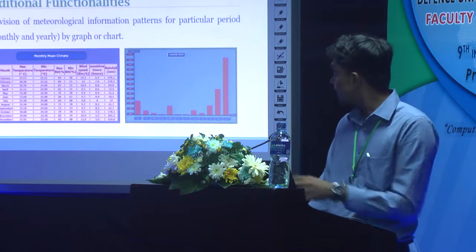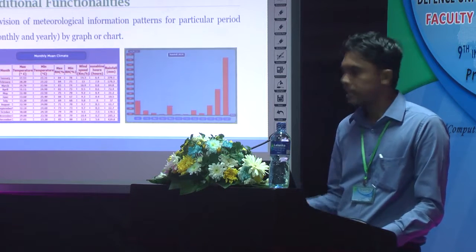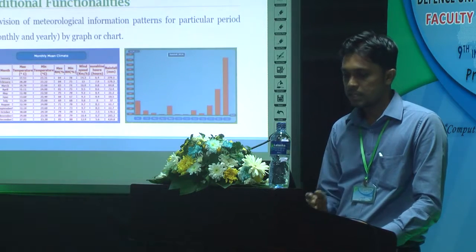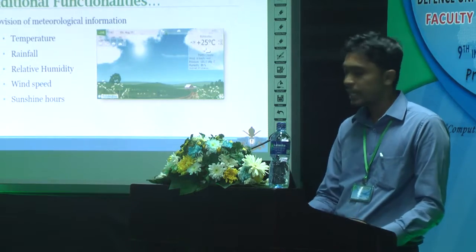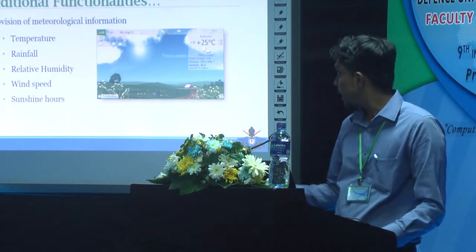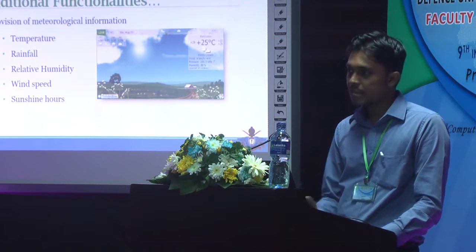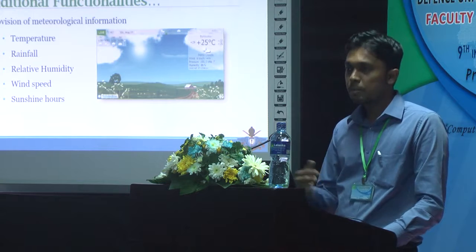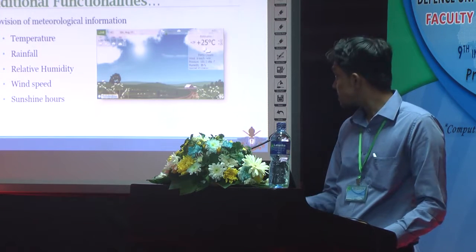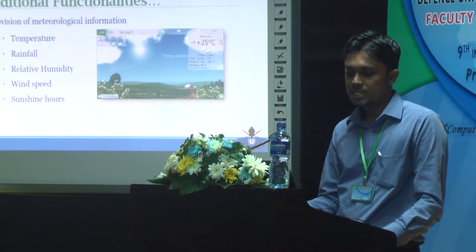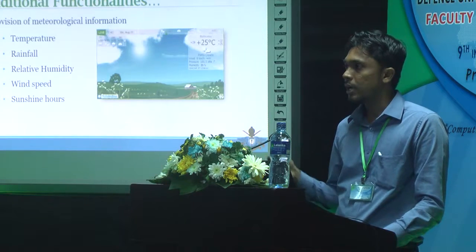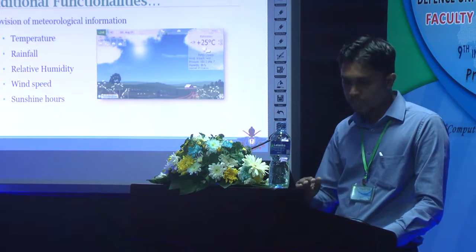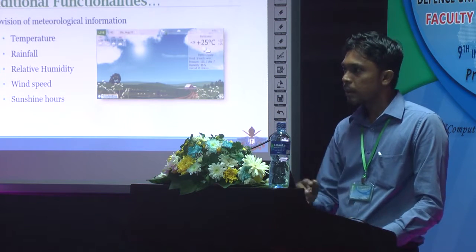There are additional functionalities in the system. One feature displays climatological patterns for each month and each weather parameter. Farmers can also access forecasting data as well as previous weather data from a particular district. Based on this information, farmers can plan their agricultural practices — for example, if a particular area has a high amount of rainfall, they can plan accordingly for crops like avian rice.